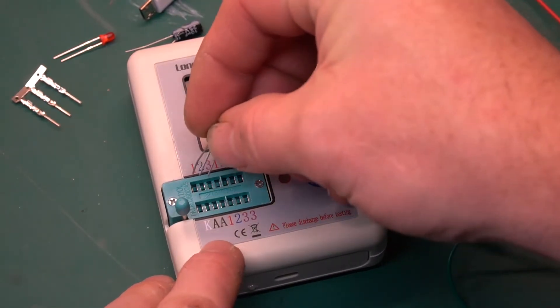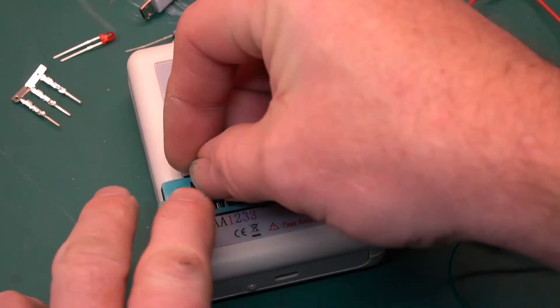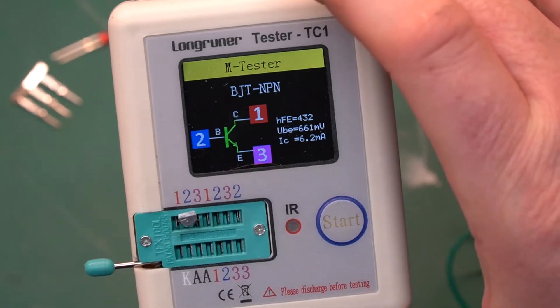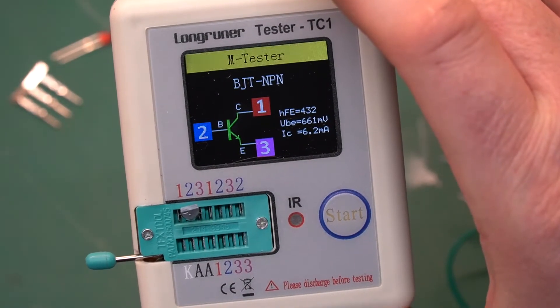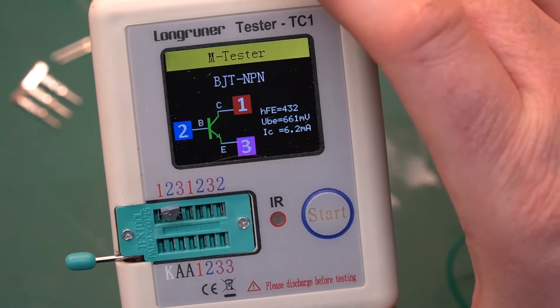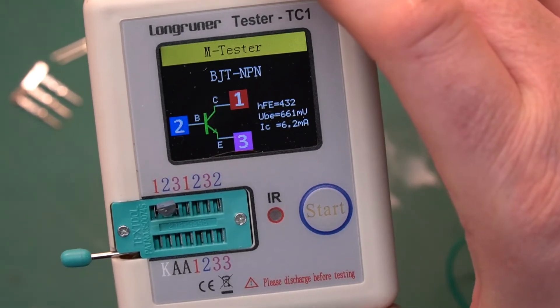I'm going to take a transistor and plug it into pins one, two, and three. We're going to hit the test button and it's not only going to tell us that it's a transistor, it's going to give us the pin layout of that transistor and the values as well, and it's pretty quick as you can see.